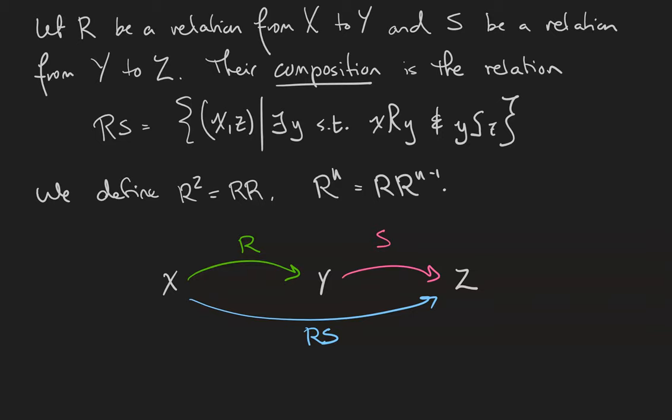We use exponential notation to define the composition of a relation with itself. For example, R squared is the relation R composed with R.